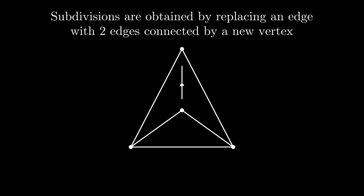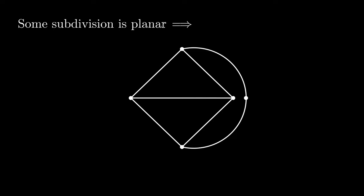A subdivision is obtained by replacing an existing edge in a graph with two new edges connected by a new vertex. Since edges don't necessarily have to be straight, we observe that if the subdivision of some graph is planar, then the original graph must have been planar as well, since we can replace the sequence of two edges by one not necessarily straight edge.